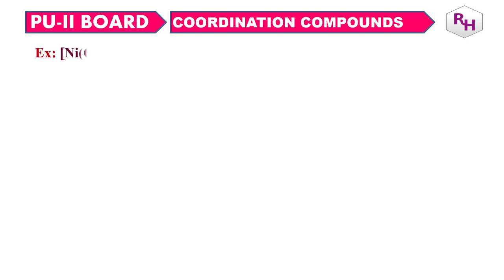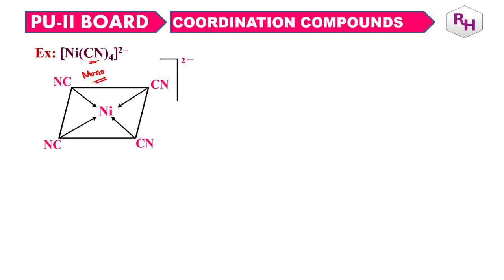Second example: NiCN4 2-. CN is once again a monodentate ligand. Looking at the structure, there are 4 coordinate bonds formed by the ligand, hence the coordination number will be 4.